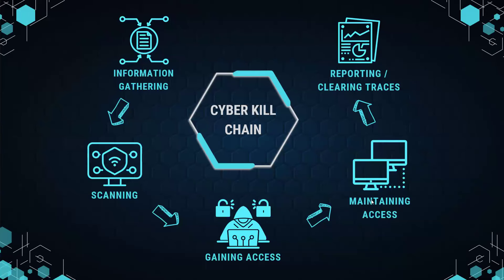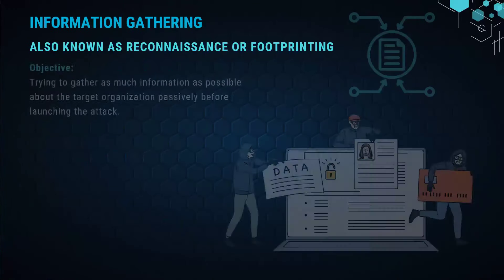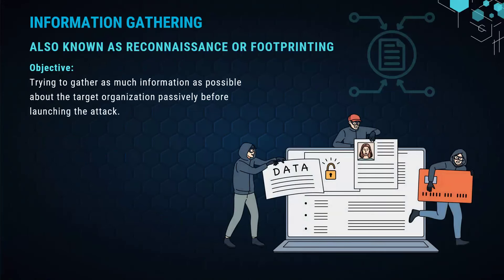The first step is information gathering, also known as reconnaissance or footprinting. The main objective is for the hacker or ethical hacker to gather as much information as possible about the target organization. This is done passively — you do not contact the organization in any way, and they don't know you're retrieving information. You get this information from third-party sources, particularly certain websites on the internet called reconnaissance websites.